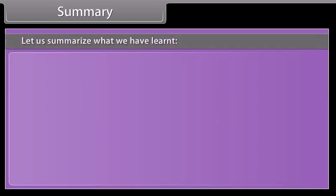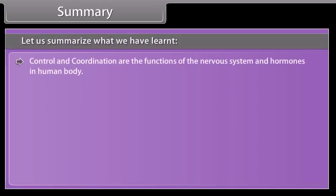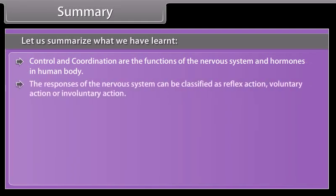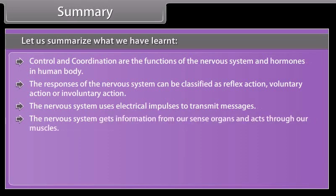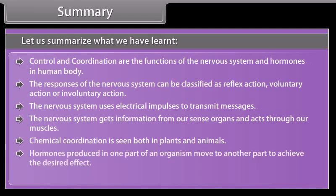Let us summarize what we have learnt. Control and coordination are the functions of the nervous system and hormones in the human body. The responses of the nervous system can be classified as reflex action, voluntary action, or involuntary action. The nervous system uses electrical impulses to transmit messages and gets information from our sense organs, acting through our muscles. Chemical coordination is seen both in plants and animals. Hormones produced in one part of an organism move to another part to achieve the desired effect, and a feedback mechanism regulates the action of hormones.